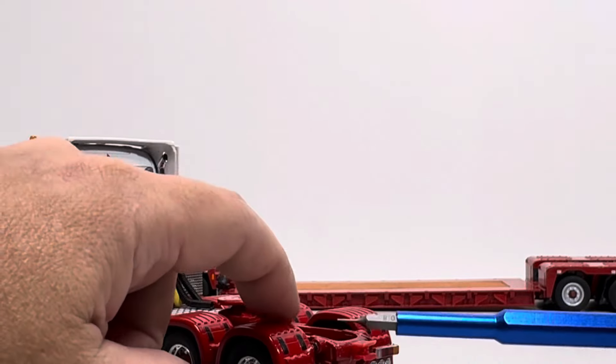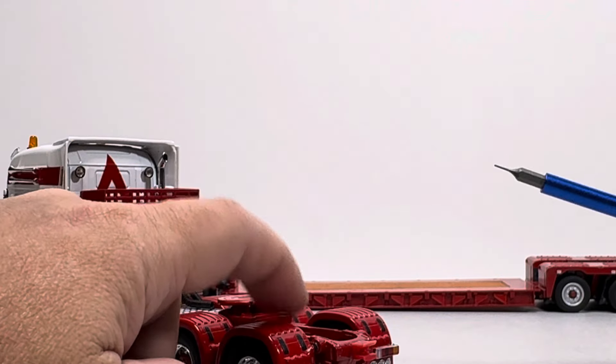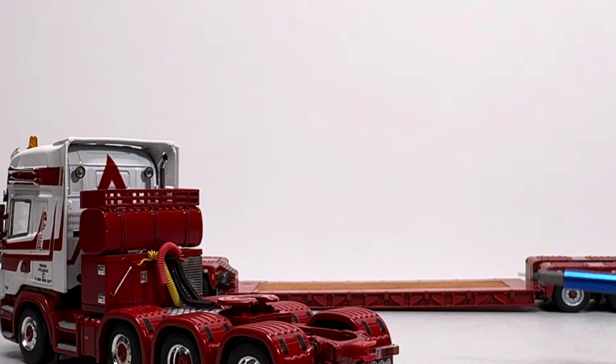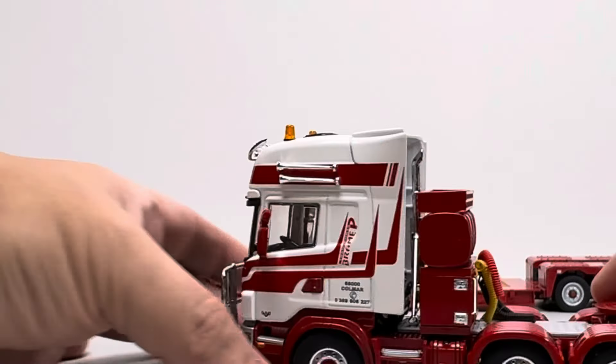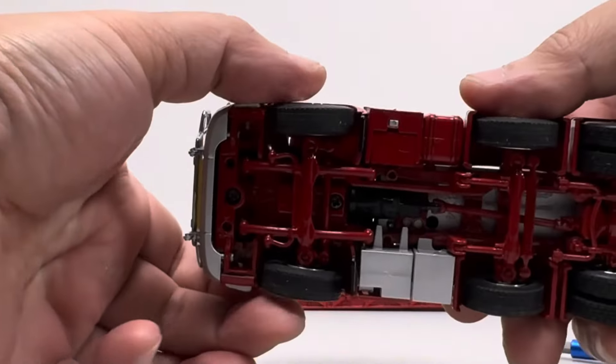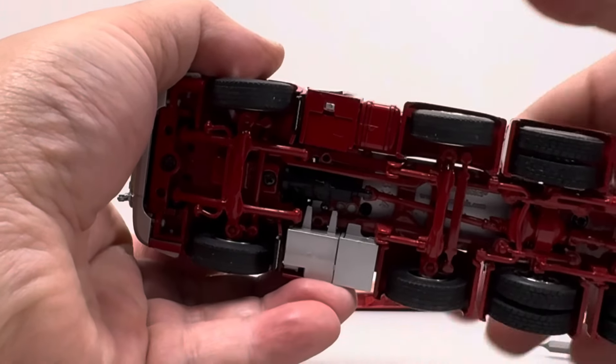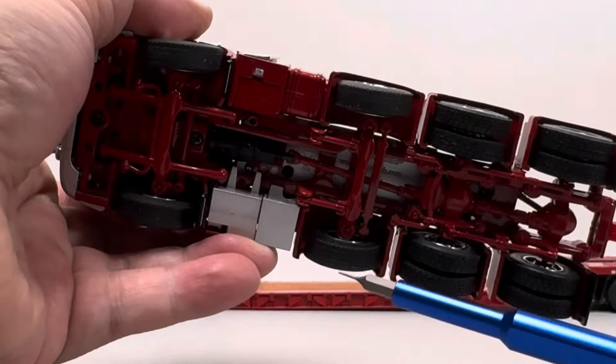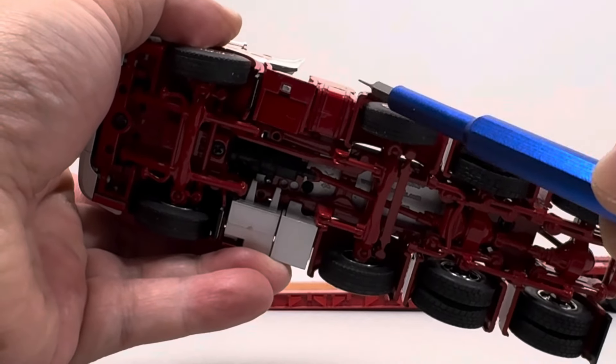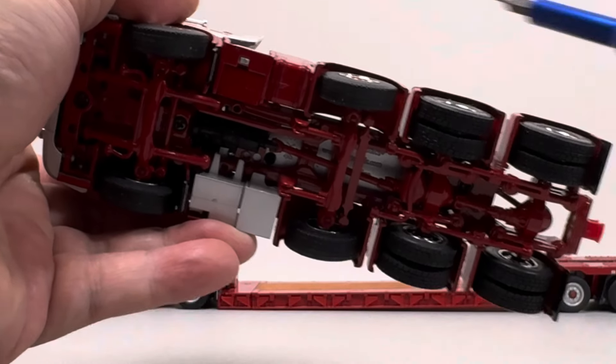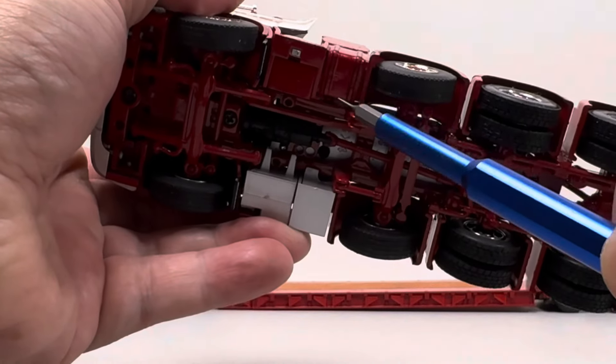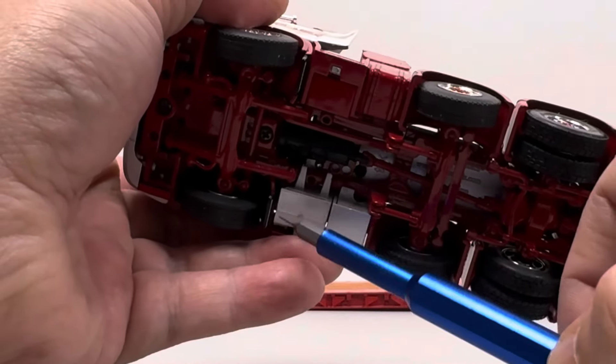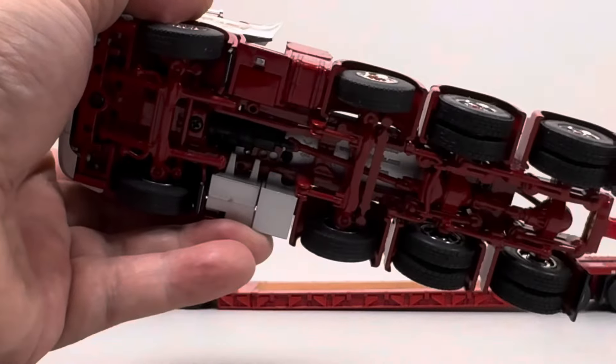Body ini metal ya, rangkanya metal semua dan kalau kita lihat bawah bawahnya bawahnya juga sama ini semua metal metal. Bender ya ini plastik, ini metal, ini plastik, ini plastik, ini plastik metal ban karet.